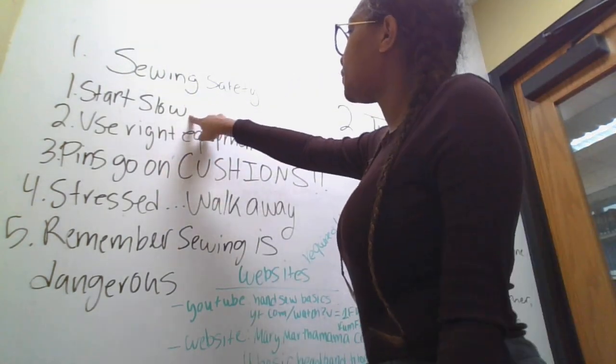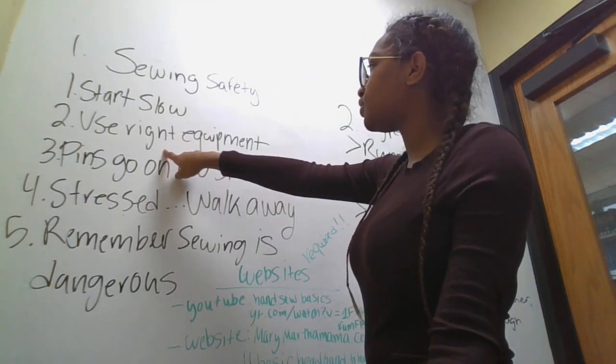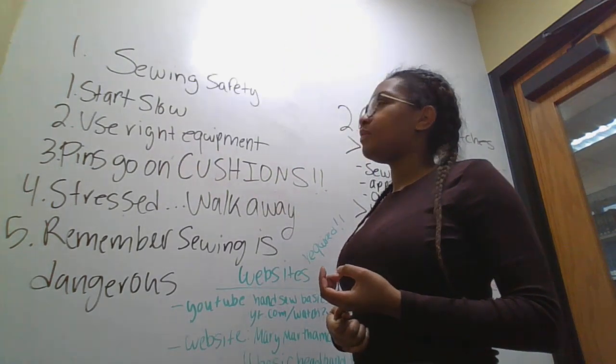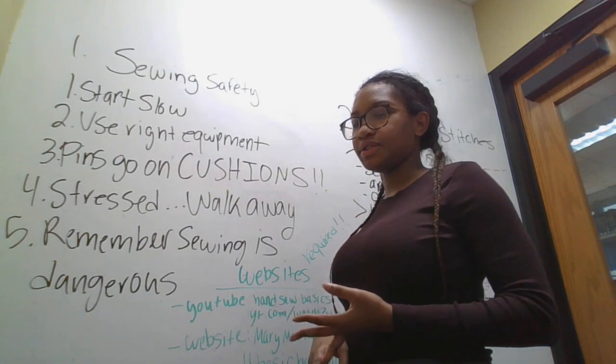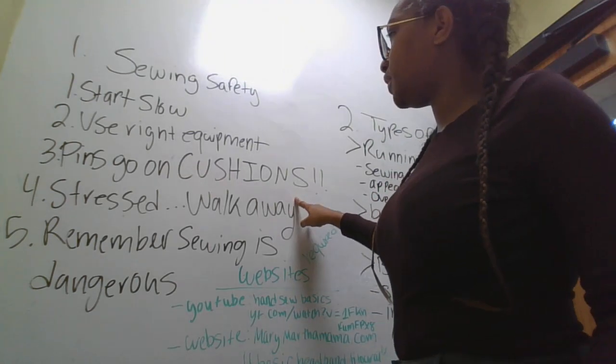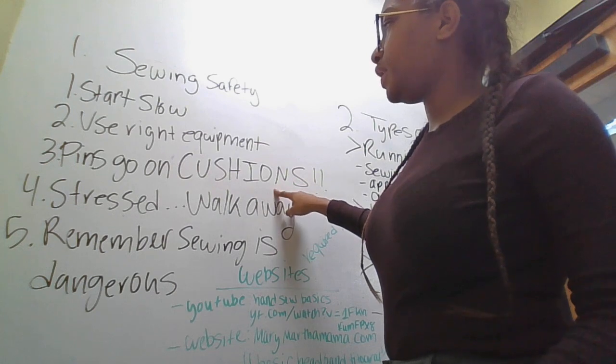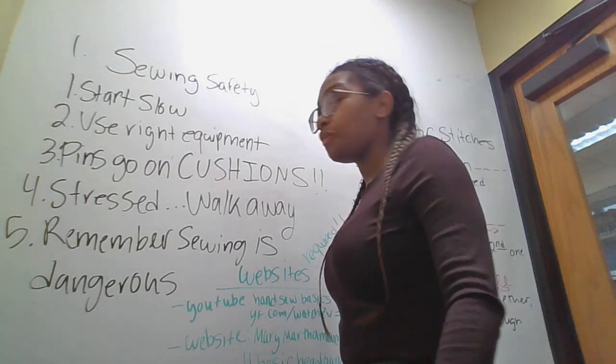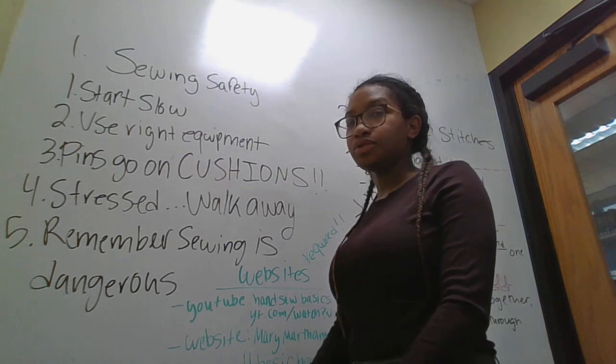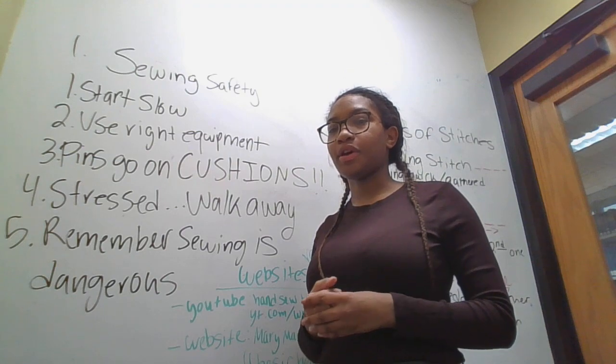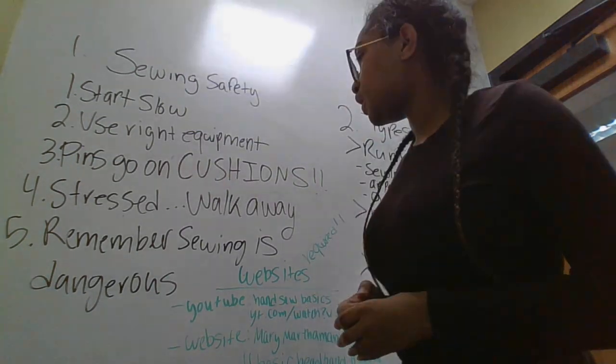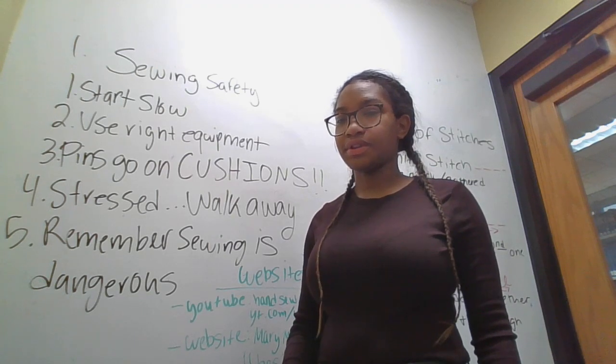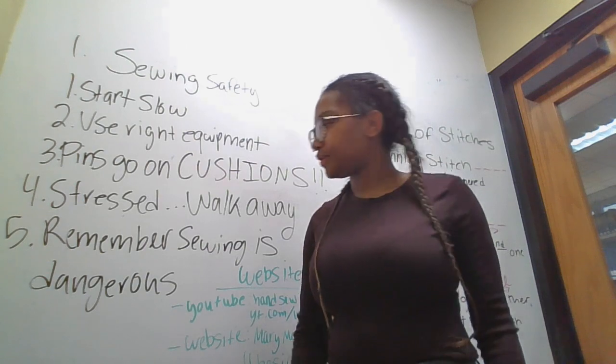The first tip is to start slow. The second tip is to use the right equipment. And what I mean by that is don't use dull scissors. Make sure you're using equipment that you know is going to be trustworthy and you're not going to be able to hurt yourself or others. The next tip, number three, is to make sure your pins go on cushions. And the fourth tip is if you are stressed while sewing, walk away. The least you want to do when you're sewing is be stressed and have shaky hands and end up hurting yourself or someone else. And five, remember sewing is dangerous. It's always important to take the right precautions when you are sewing to ensure that you're keeping yourself safe.